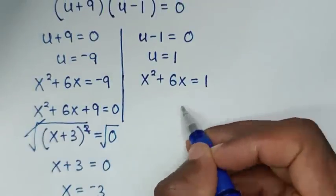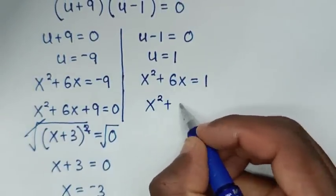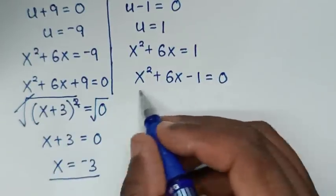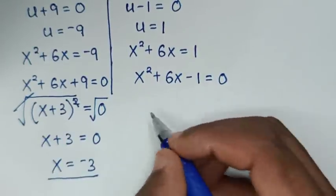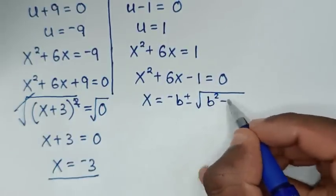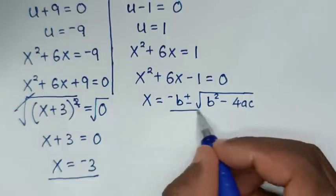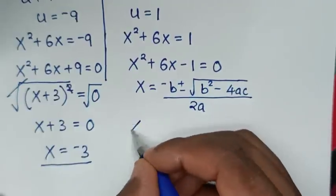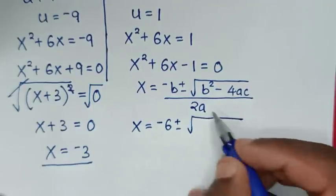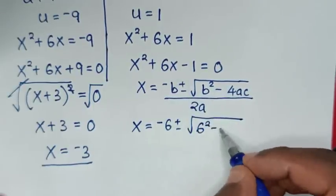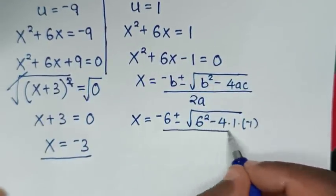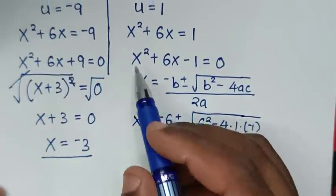For the second case, taking 1 to the left: x²+6x−1 = 0. We solve this using the quadratic formula: x = [−b ± √(b²−4ac)] / 2a, where a = 1, b = 6, c = −1.